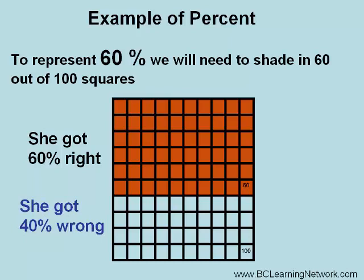It would be the forty non-shaded squares at the bottom, representing forty percent that she got wrong. In math, always do your corrections, regardless of your mark, because often learning new concepts requires mastery of old ones.